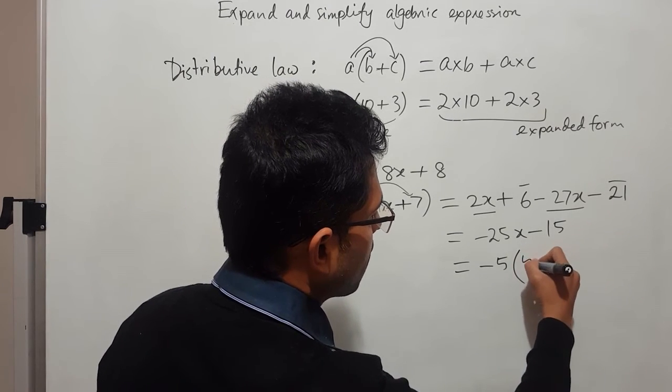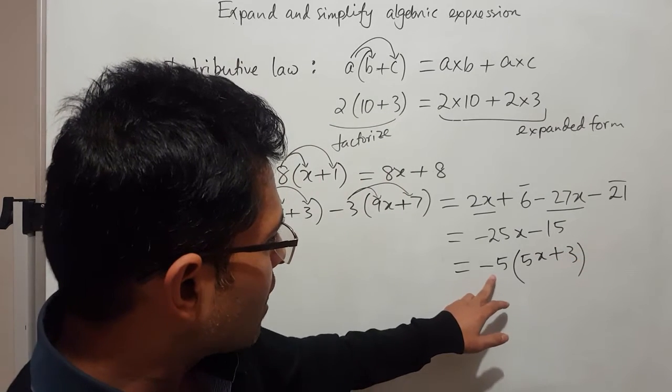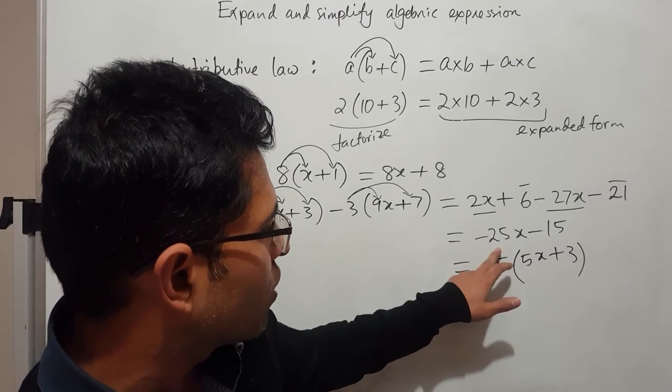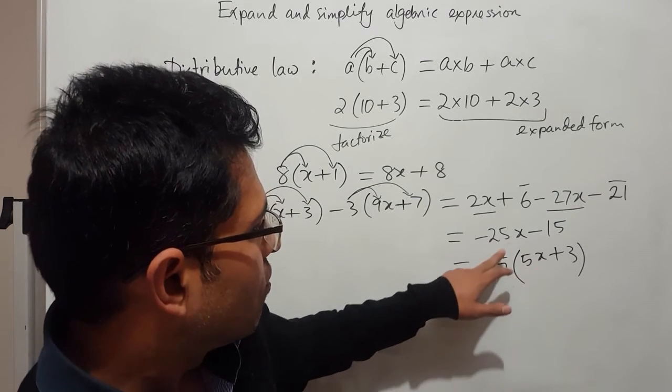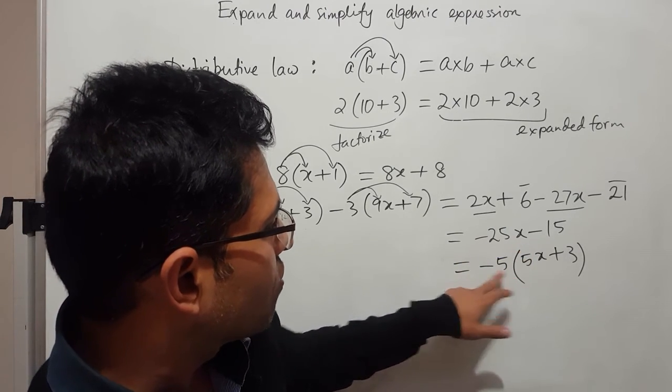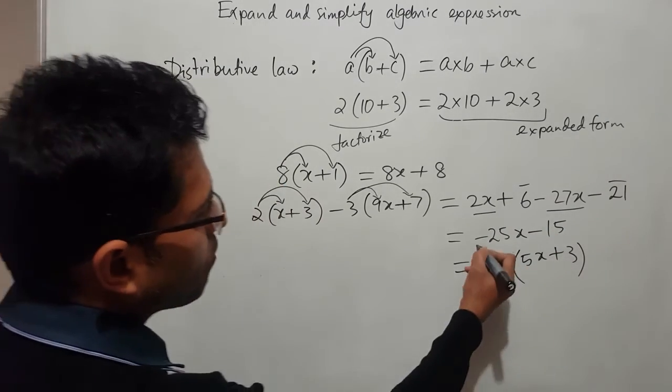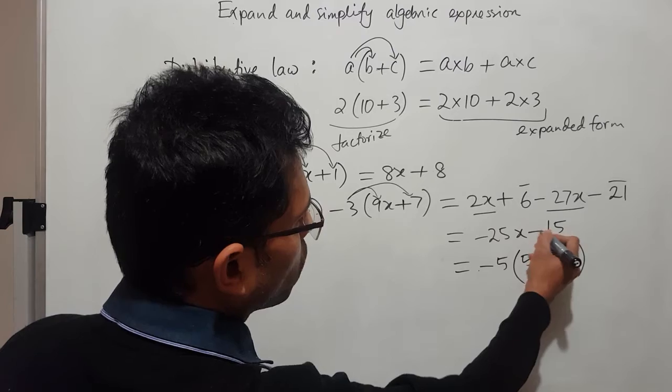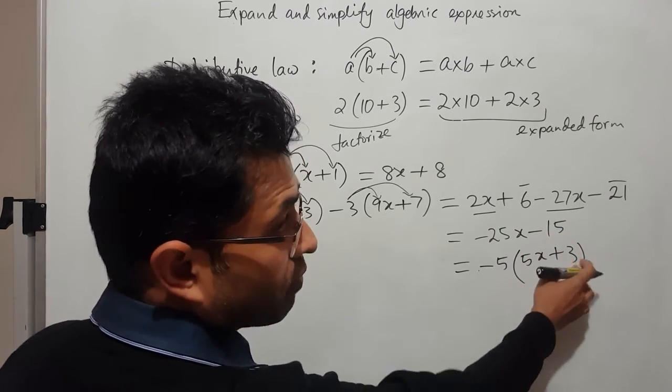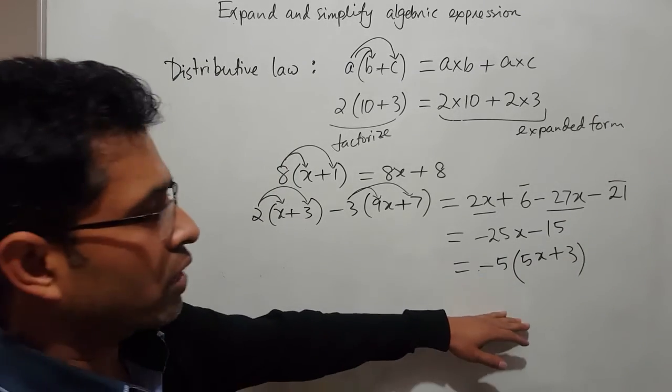So I can write down first there is negative 5 times 5x plus 3. Now you can see that minus 5 times 5x it would give you minus 25x, because 5 times 5 is 25, times x is 25x. And then if you do minus 5 times 3 is 15. So I am taking the minus out, that's why both negatives are getting positive. And then I am dividing by 5. The inside part should be divided by 5 because I am taking the 5 out. And that's how we need to do the factorizing.